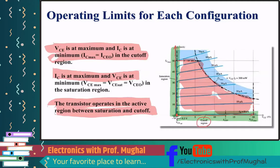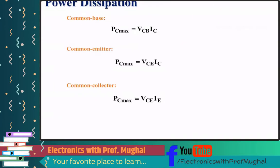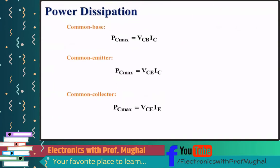If you want to use a BJT transistor as a switch, you choose whether to operate it in the saturation region (on) or the cutoff region (off). If you want to use your transistor as an amplifier, you need to make sure it's working in the active region. For power, simply apply Ohm's law: Pc max for common base is Vcb times Ic.